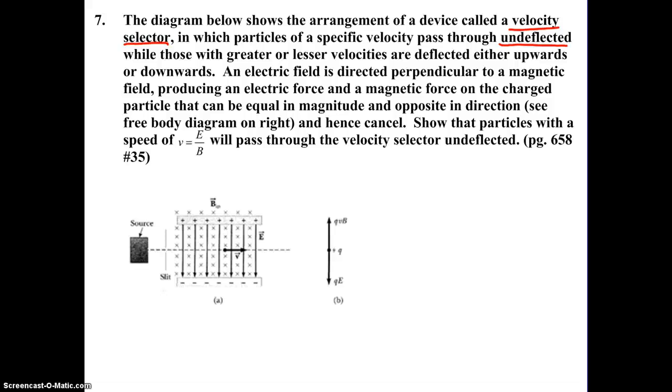Show that particles with a speed of V equals E over B will pass through the velocity selector undeflected. Well, here's our particle right here inside the velocity selector, whose speed is to the right. And we're told over in this diagram that it is a positively charged particle. Well, because of that, you can see we have a set of parallel plates.